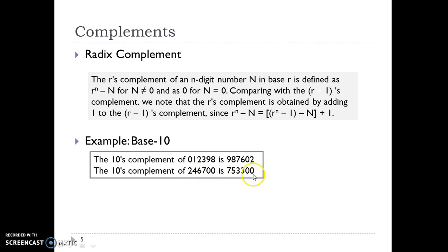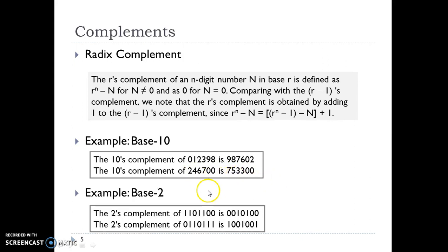Starting from the rightmost non-zero digit: 9 minus 7 is 2 plus 1 is 3. After that all the remaining digits are subtracted from 9: 9 minus 6 is 3, 9 minus 4 is 5, and so on. And if the number system is binary, to find the 2's complement we just invert all the bits and then add 1. This example will be made even clearer in the next slide.